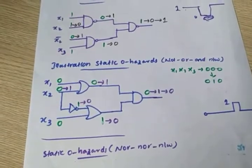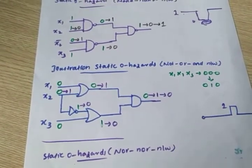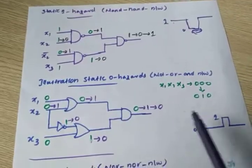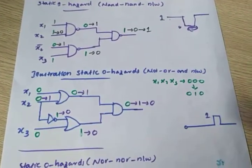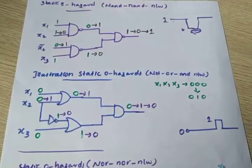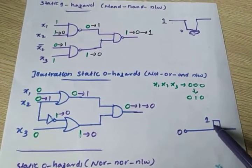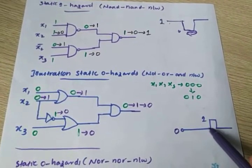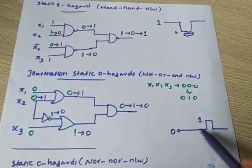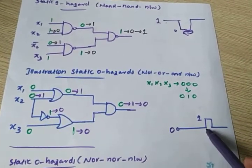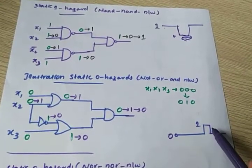Next is static zero hazard. In static zero, we are expecting zero output. We are expecting zero output, and a one will come for a short duration of time. Momentarily, one will be coming into the picture, and that is actually unwanted. We always want the zero output, but one came into the picture, so this should be avoided.